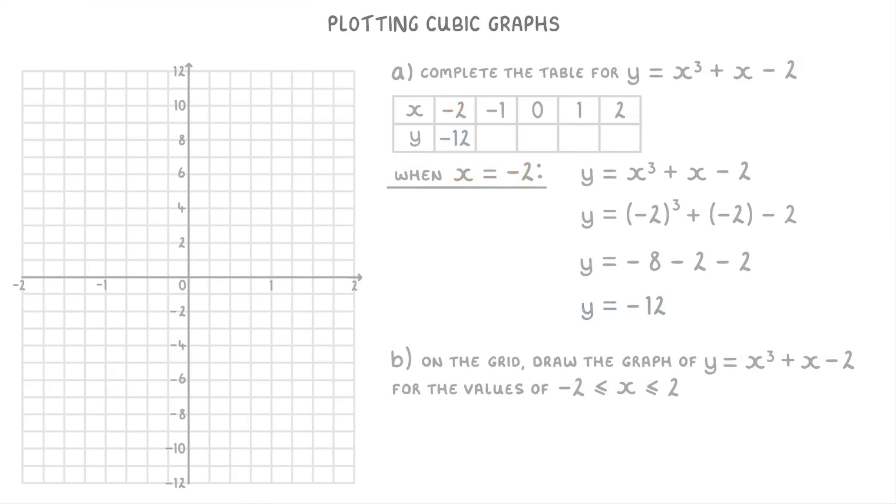Then we just need to do exactly the same thing for all of these other x values, which if we pretend we did all the working, would give us minus 4, minus 2, 0, and 8.